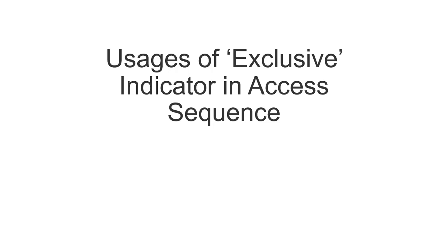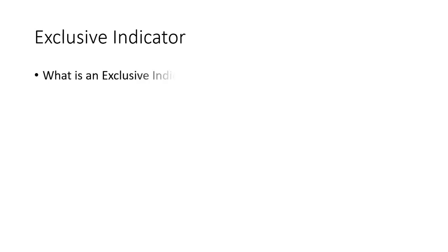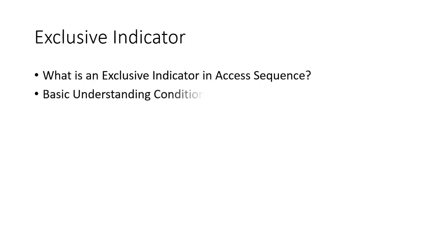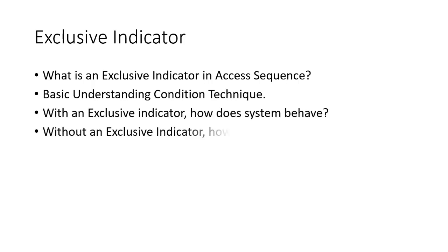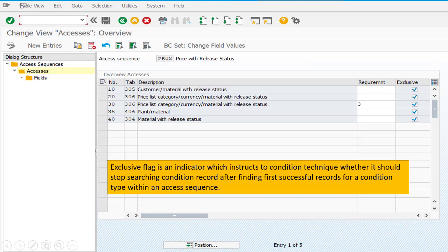Today we will discuss the usage of the exclusive indicator in access sequence. In this video I will explain four things: what is the exclusive indicator, and before going into detail about the exclusive indicator and its demonstrations, we have to understand the basic condition technique, because ultimately the exclusive indicator also plays a vital role in your condition technique. Also, with and without exclusive indicator, how the system behaves in your sales document.